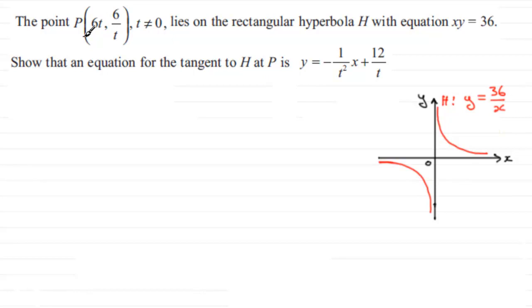We have this general point P at 6t, 6 over t. It could be anywhere on this curve dependent on the value of t. Let's suppose we place it somewhere here. So we've got the tangent at point P.